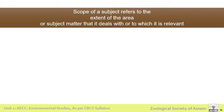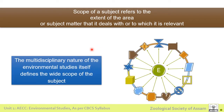First, let us understand the meaning of the word 'scope.' The scope of a subject area refers to the extent of the area or the subject matter that it deals with, or what it is relevant to. When we talk of environmental studies, the multidisciplinary nature of environmental studies itself defines how wide the scope of the subject is.